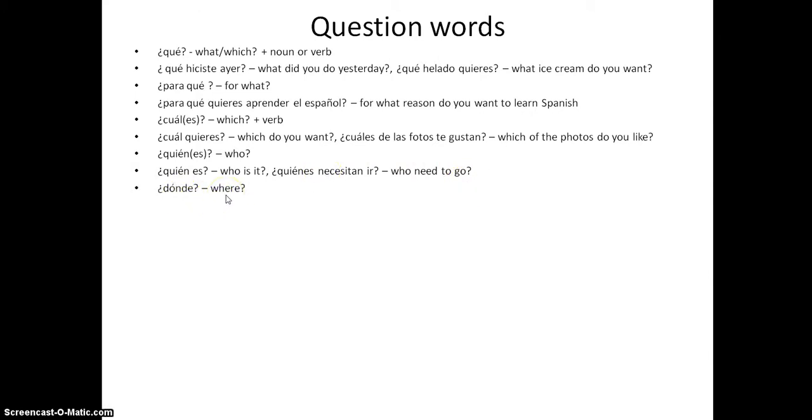'¿Dónde?' - where. '¿Dónde vive?' - where does he or she live? '¿Dónde está?' - where is it? '¿A dónde?' - to where. Not quite so usual in English, but it's used for mainly '¿a dónde vas?' - where are you going to? We probably dropped the 'to' in English: where are you going?